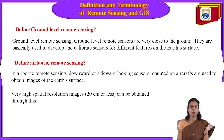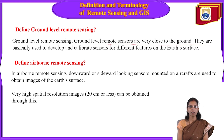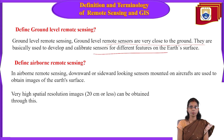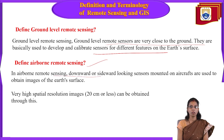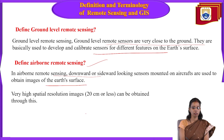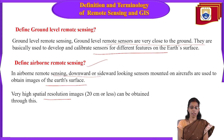Ground level remote sensing is very close to the ground and is used to develop and calibrate sensors for different features on the earth's surface. Airborne remote sensing provides very high spatial resolution images of 20 centimeters or less.